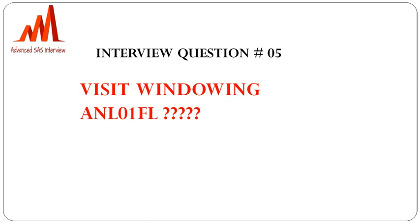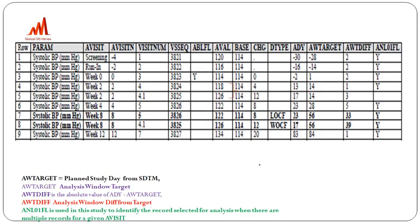In the protocol, if there are multiple data points within an analysis window, we pick the value that is observed closest to the pre-specified target — the planned target visit. For example, at week 2, there are two values observed at study days 13 and 17.